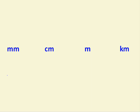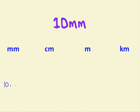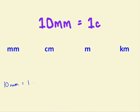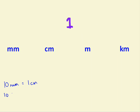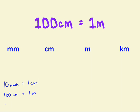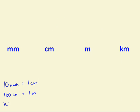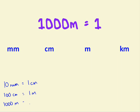Now, how to convert between these? First off, I'll just write a few key conversion facts. There are 10 millimetres in 1 centimetre. There are 100 centimetres in 1 metre. There are 1000 metres in 1 kilometre.